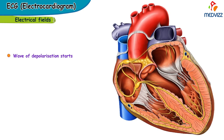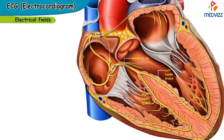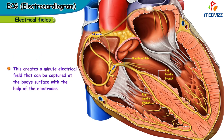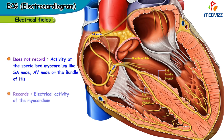When the wave of depolarization starts at the SA node, it travels through the atria, AV node, the bundle of His, and eventually to the ventricular myocardium. This creates a minute electrical field that can be captured on the body's surface with the help of electrodes. Note that the ECG does not record the activity at the specialized myocardium like the SA node, the AV node, or the bundle of His — it only records the electrical activity of the myocardium.